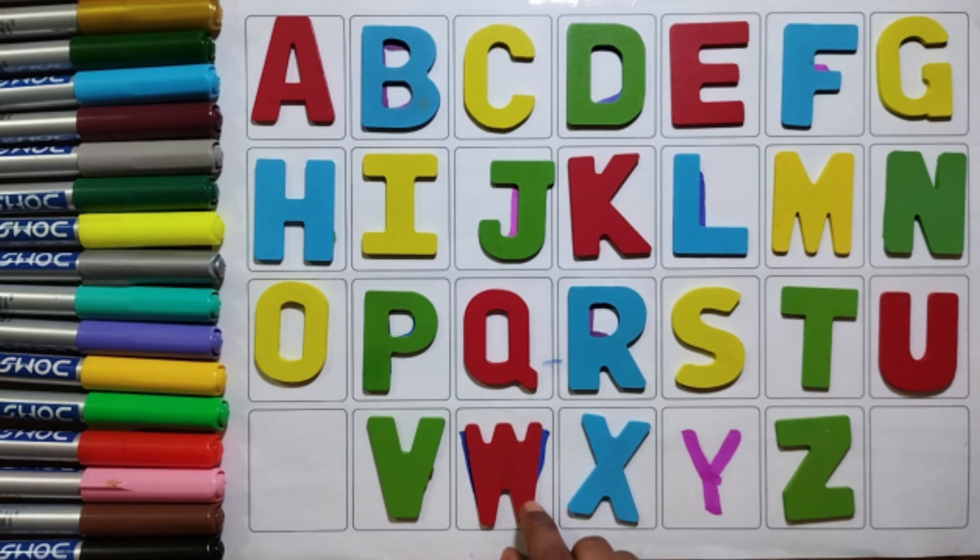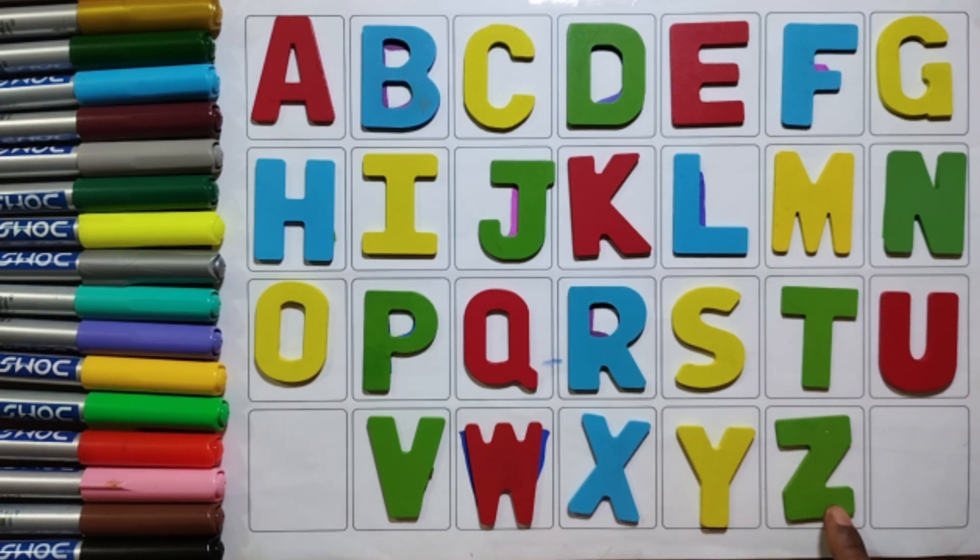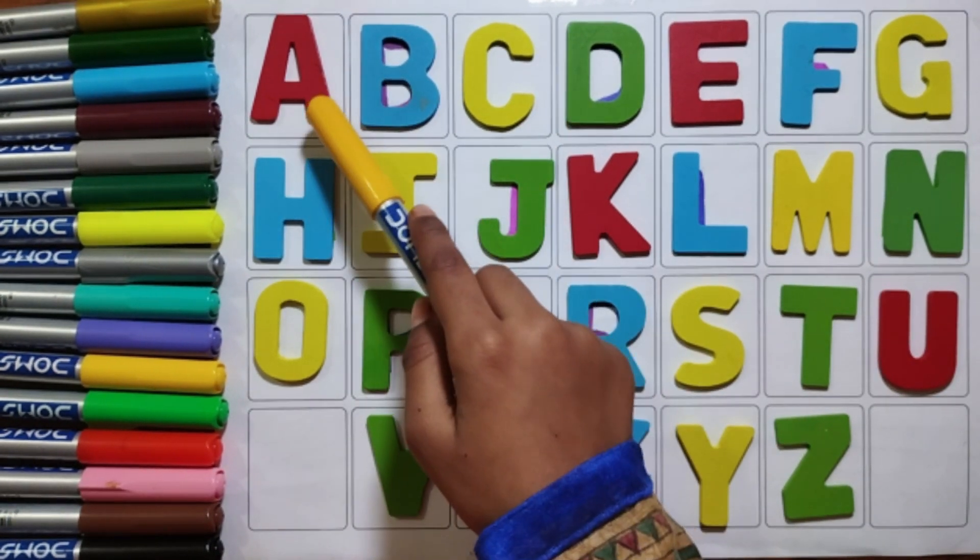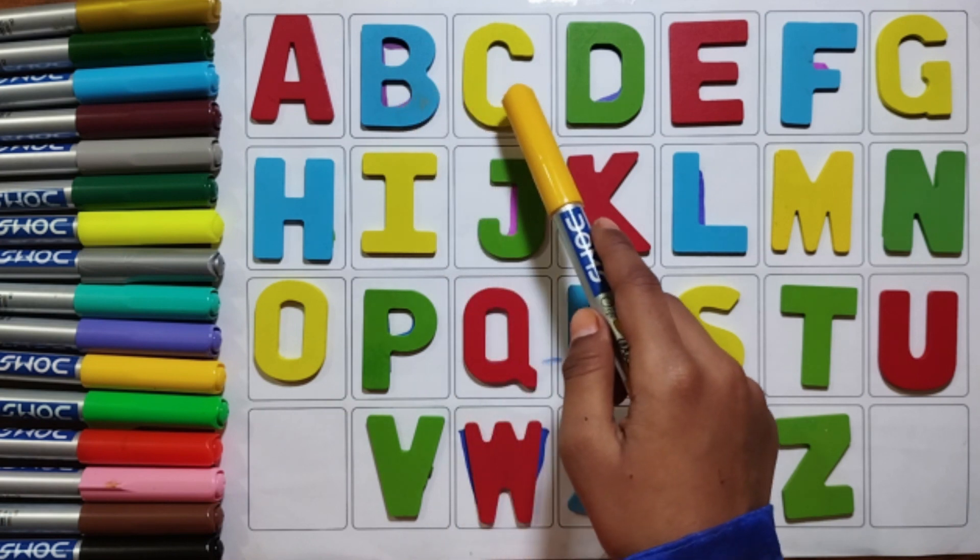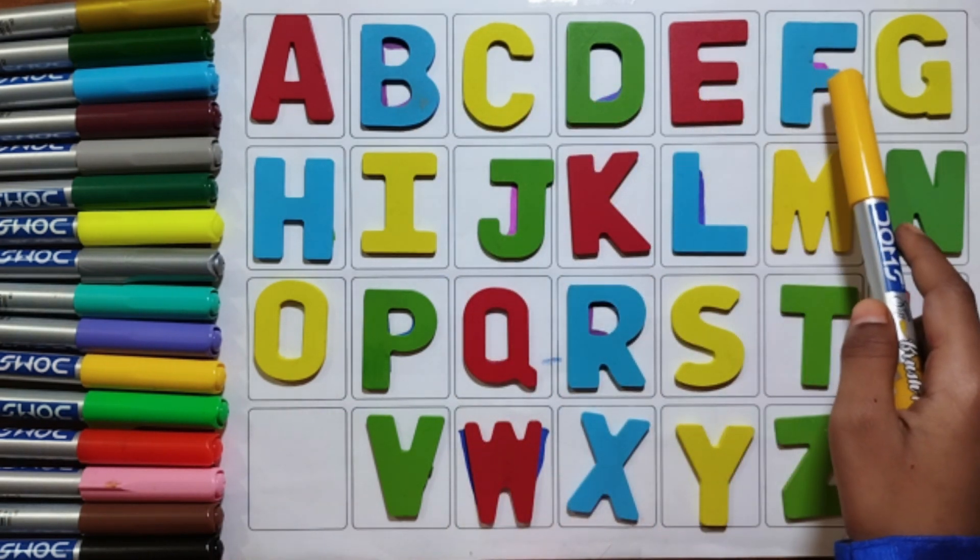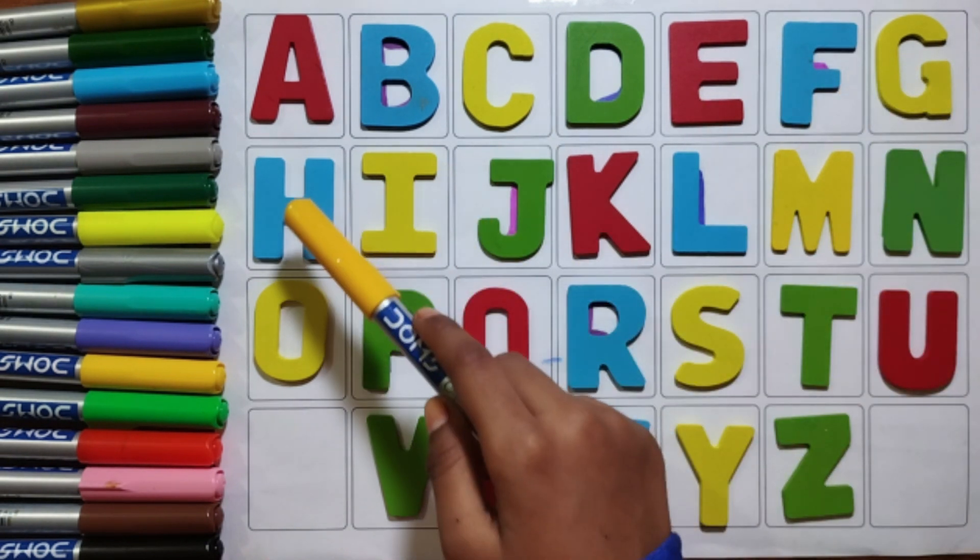Red colour W W for Window. Sky blue colour X X for Xylophone. Yellow colour Y Y for Yellow. Green colour Z Z for Zebra. A B C D E F G H I J K L M N O P Q R S T U V W X Y Z.